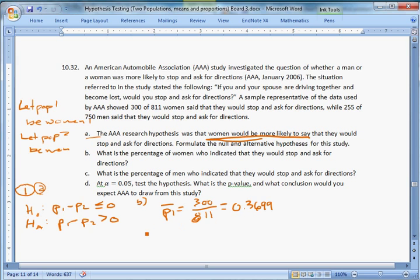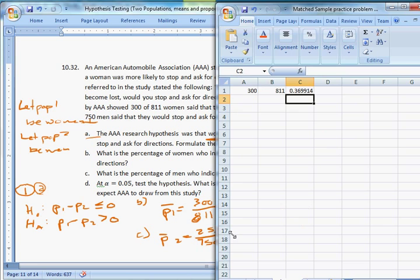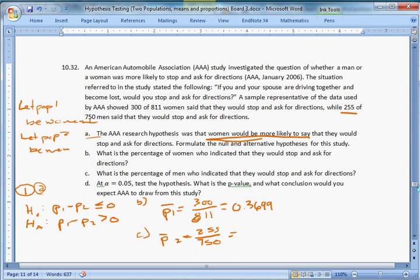What's the percentage of men who indicated that they would stop? That's going to be P bar 2, and that comes from 255 of 750. So 255 divided by 750 is 0.34 on the nose. So 34% of men exactly said that they would stop and ask for directions.